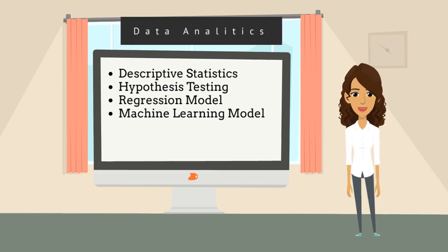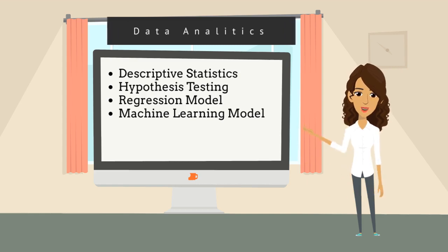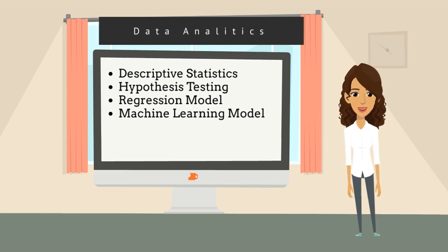This process depends on which problem you would like to solve. Either a regression model or other popular machine learning models would be built in this process. You may already hear about these names such as decision trees, gradient boosting, random forest, support vector machine. After building the model, we will validate the model by using a further data set.